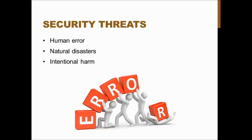Natural disasters also occur — things like hurricanes and flooding, especially in places like Florida, where technology stored on computers could be damaged. Paper records could be destroyed. If records are backed up on a computer and stored in a different state, that's the safest thing a practice can do. Intentional harm refers to things like hackers and viruses — people intentionally trying to breach the system and distribute health information for their own gain.